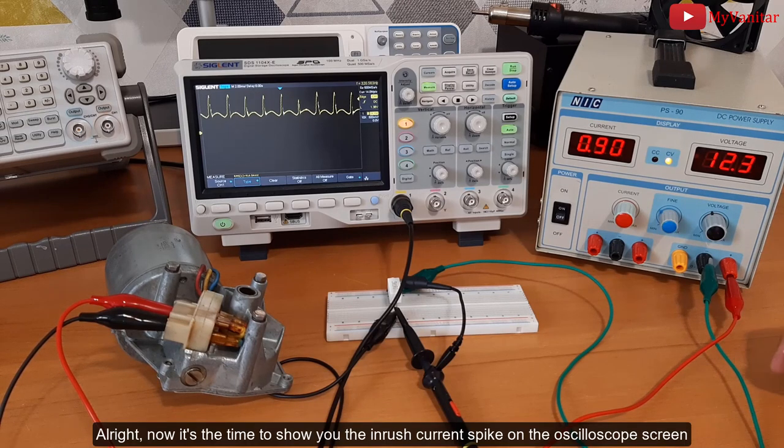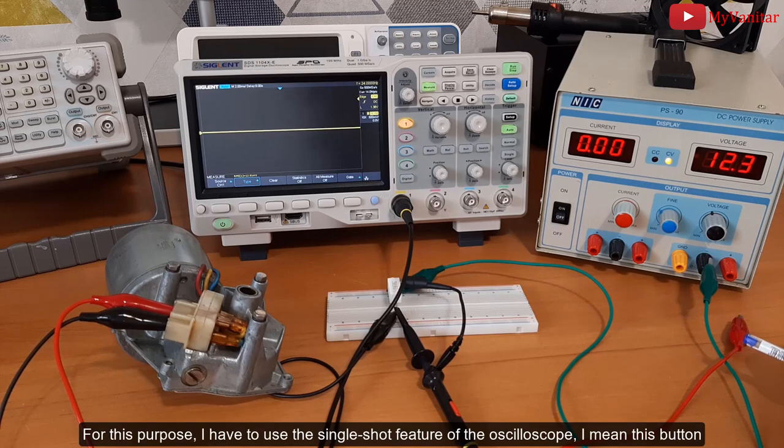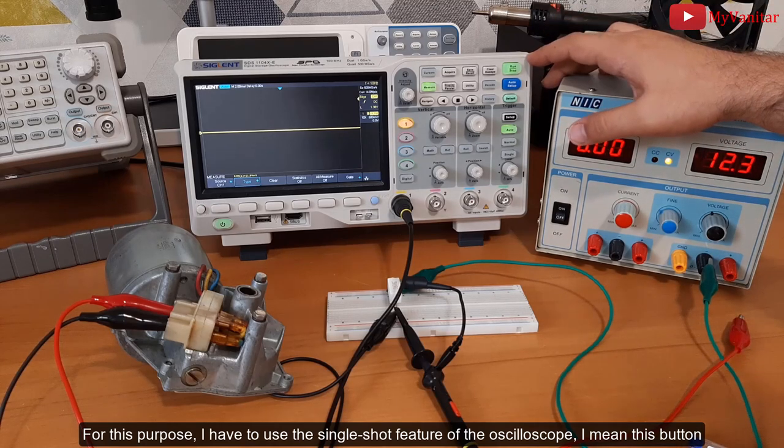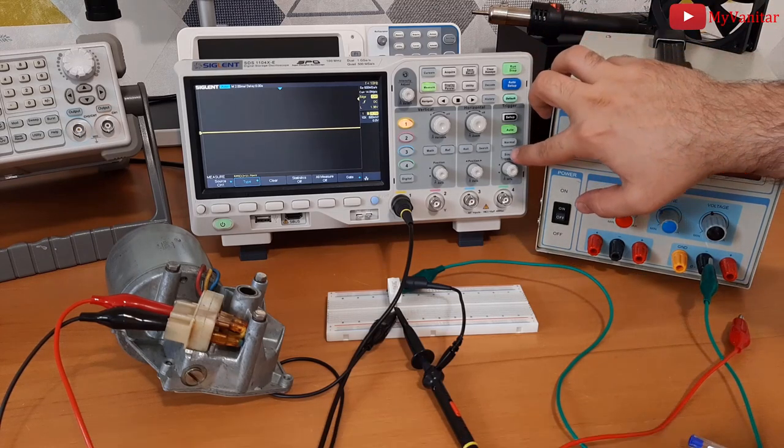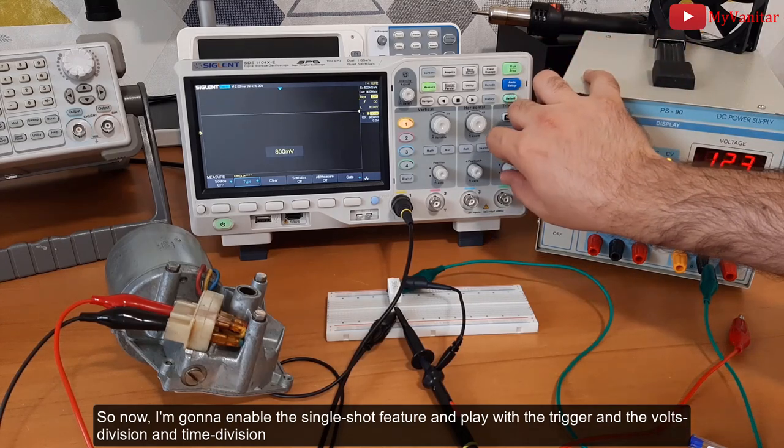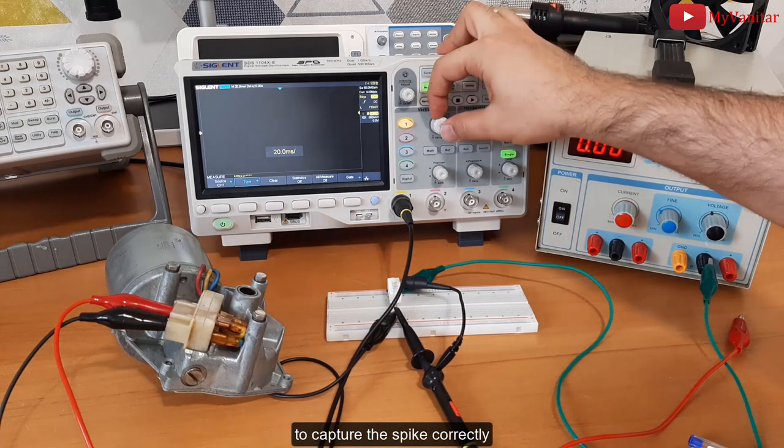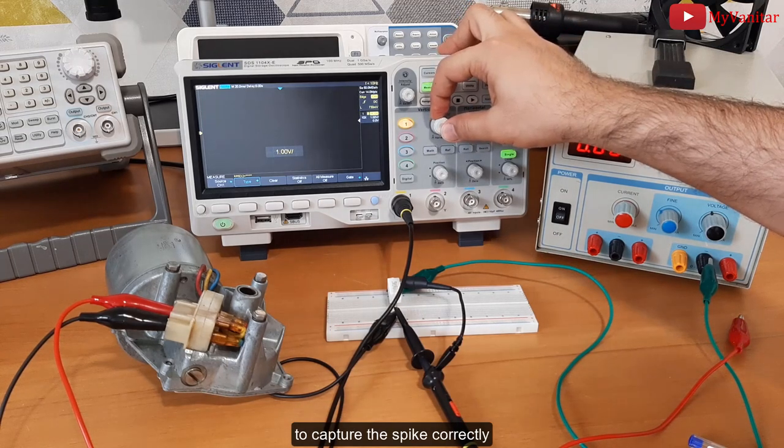time to show you the inrush current spike on the oscilloscope screen. For this purpose, I have to use the single shot feature of the oscilloscope - I mean this button. So now I'm gonna enable the single shot feature and play with the trigger and the volt division and time division to capture the spike correctly.